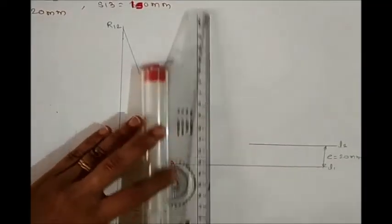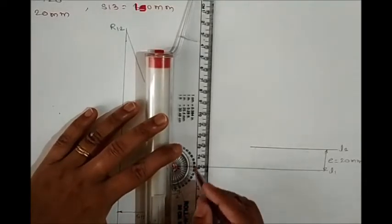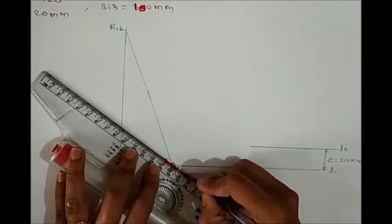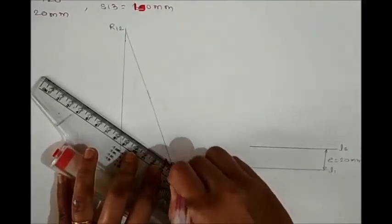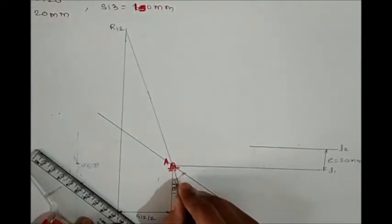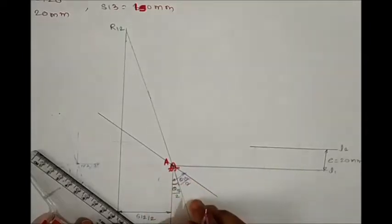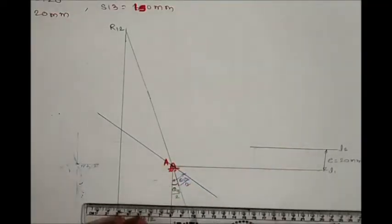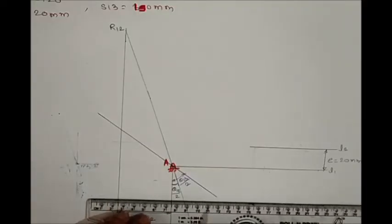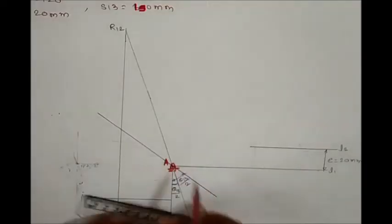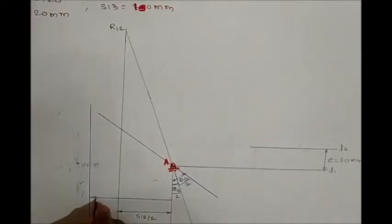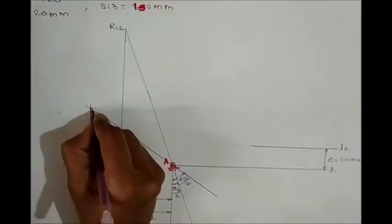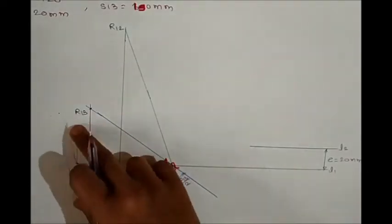Similarly, from the reference line at point A, rotate with an angle equal to theta 1-3 by 2 and mark that line. Then take a horizontal distance from the vertical reference line equal to s 1-3 by 2. Both lines meet at point R13. So we now have relative poles R12 and R13.